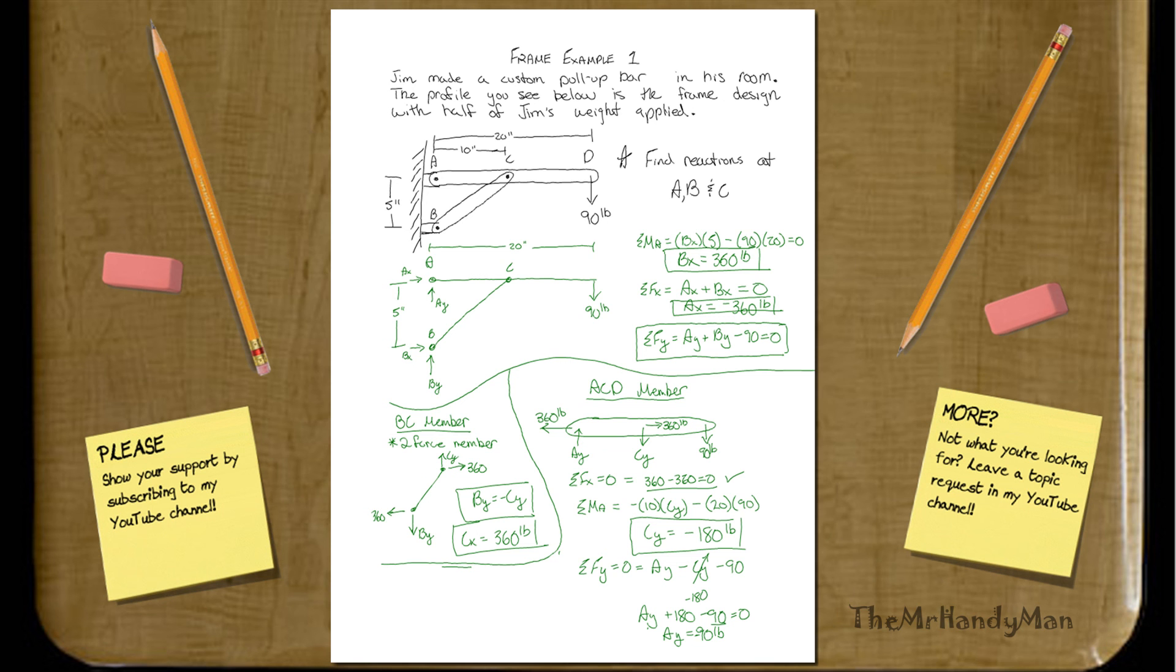we can see that A_Y plus 180 minus 90 will equal zero. So A_Y will equal 90 pounds. Kind of nifty that way, but it would be 90 pounds negative, right? In the terms that we see here. Yeah, that's correct. So it would be negative 90 pounds. Great. So now we know what A_Y is equal. We know what C_Y is equal.